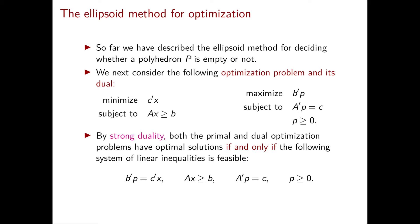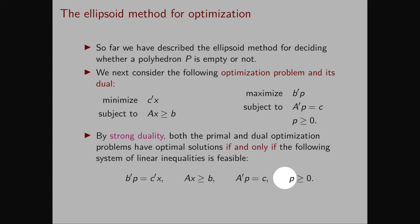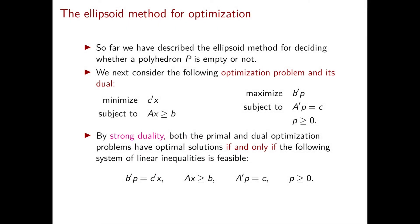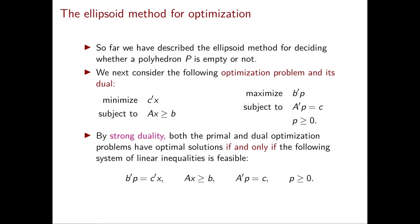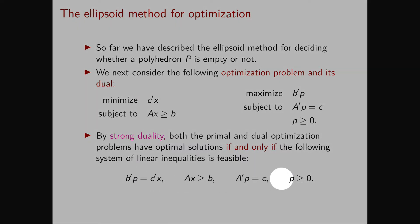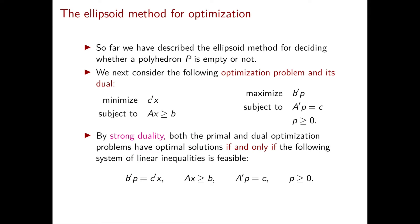In other words, if and only if the following system is feasible: AX greater than or equal to B for primal feasibility; A transpose P equal to C and P greater than or equal to 0 for dual feasibility; and finally P transpose B equal to C transpose X in order for the two solutions to have the same cost. We denote by capital Q the set of points X, P that satisfy all these linear constraints.